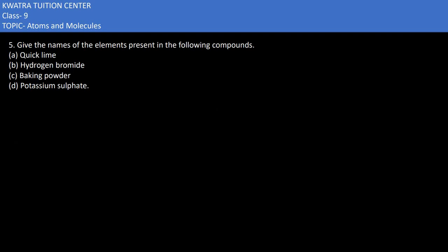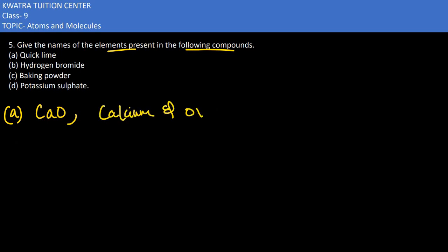Let's have a look at the other one. Here we will tell the names of the elements present in the following compounds. First we have quick lime. Quick lime is nothing but calcium oxide. So which elements are present here? Calcium and oxygen.